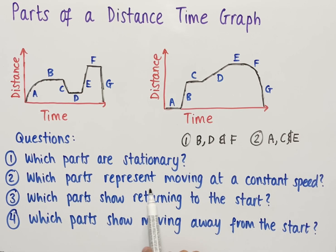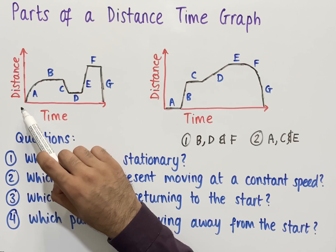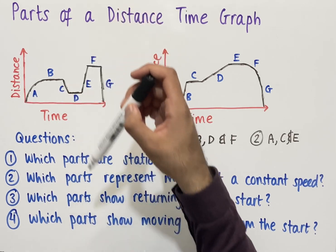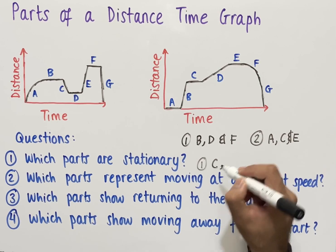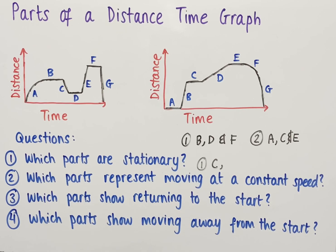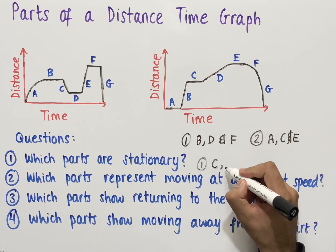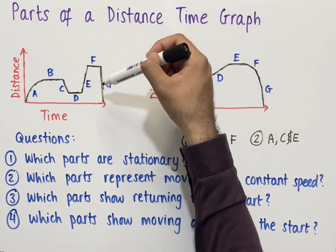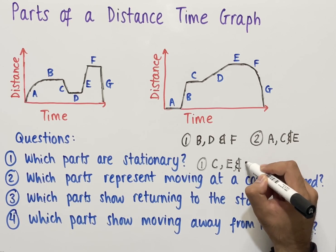The second question asks which parts represent moving at a constant speed. The object must be moving and it must be moving at a constant speed. In the first graph, part a represents deceleration, part b is stationary, and part c is the object returning to the start at constant speed since it's a straight line. Part d is stationary, part e is constant speed as it's a straight line, part f is stationary again, and part g is the object moving back to the start at constant speed. So for graph one the answers are c, e, and g.